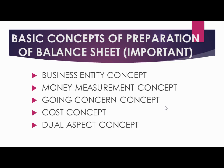The last and most important concept is the dual aspect concept, which states that whenever any transaction occurs, it impacts two things in the accounting equation. For example, if there is an increase in one asset, there is a decrease in another asset. If I purchase something with cash, my cash decreases but my raw material asset increases.